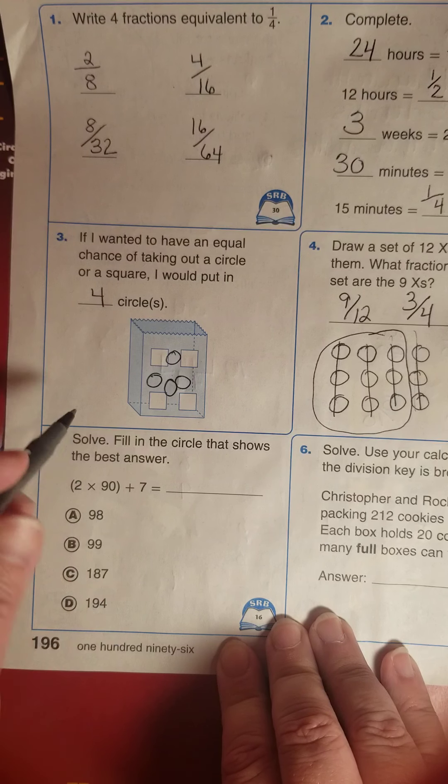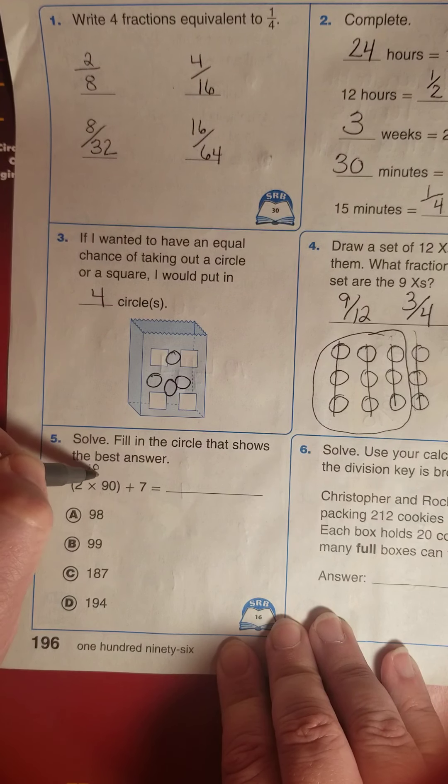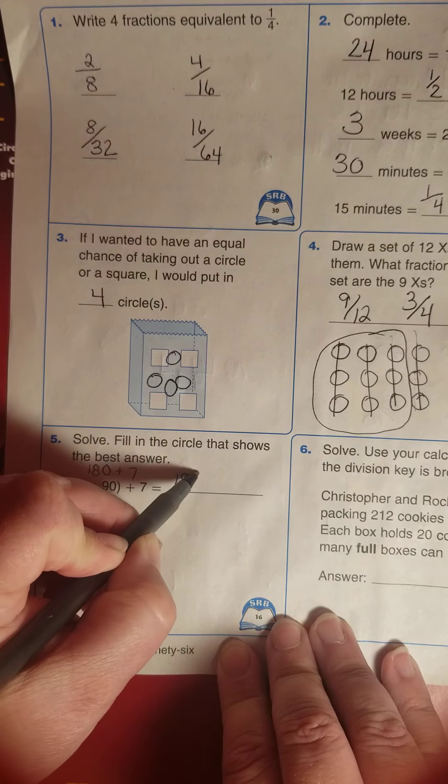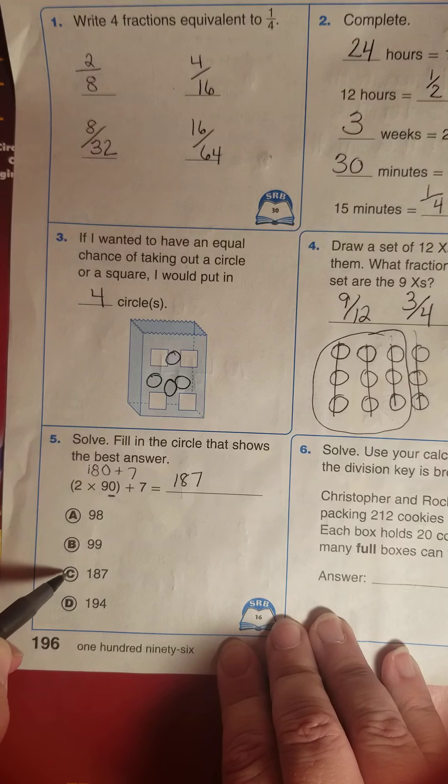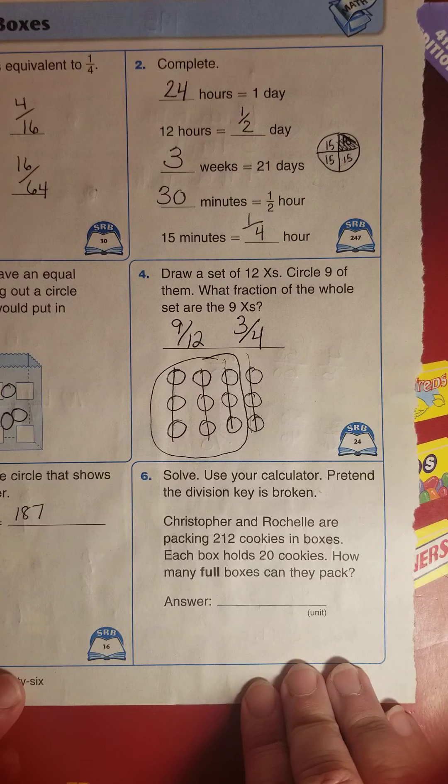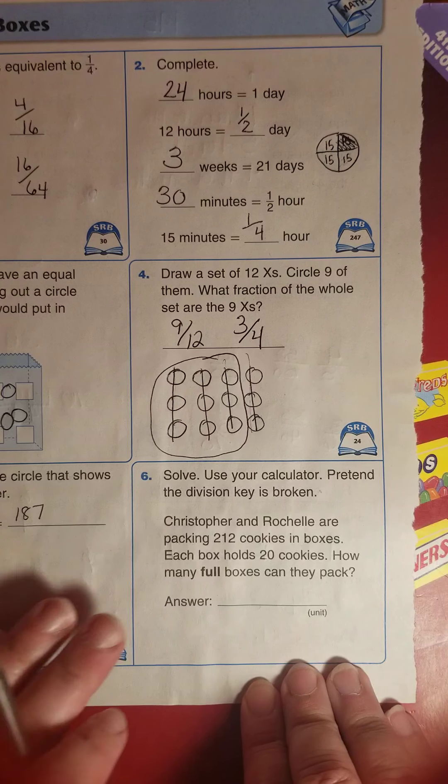We're going to solve with parentheses. Remember the rule? Do what's in parentheses first. I know that two times ninety is one hundred eighty, plus seven would give me one hundred eighty-seven. I hope that's one of my choices.